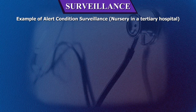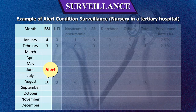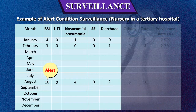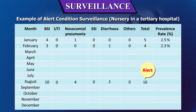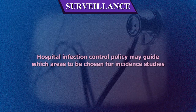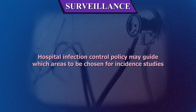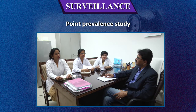An example of alert condition surveillance should include month, BSI, UTI, nosocomial pneumonia, SSI, diarrhea, others, and total prevalence rate. Hospital infection control policy may guide which areas to be chosen for incident studies.